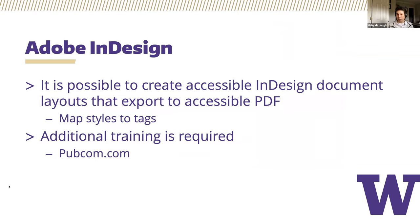Adobe InDesign is a popular page layout program that uses text and images to create fancy brochures. It is possible to create a document in InDesign and have it export to an accessible PDF document that does not require any additional remediation using Adobe Acrobat or any other remediation source, but there's a specific workflow that needs to be followed. This includes mapping styles to tags using the paragraph styles pane and editing the tags in the export tagging menu. Additional training is available through third parties and will be necessary to learn this workflow. The resource pubcom.com provides comprehensive training on how to create accessible InDesign documents that export to accessible PDF.